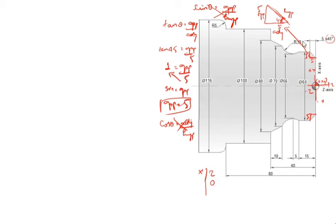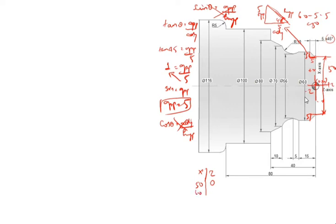60 minus 5 minus 5 is 50, so this value is 50. You have to write plus 50. This value is 5, so minus 5. What is the X value? X value is 60. So 60 minus 5 — up to here finished. After that you go this side; this side is also 60. This value is 15, so minus 15. So 60 minus 15 — up to here finished.